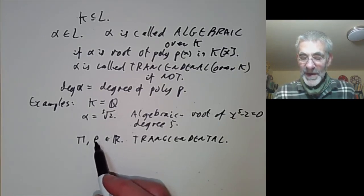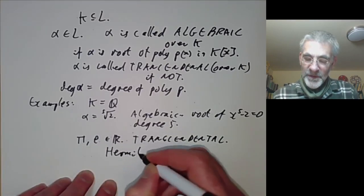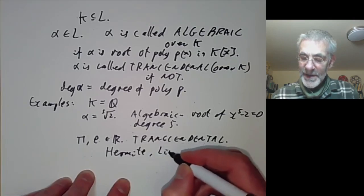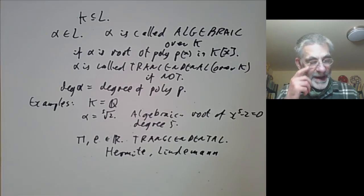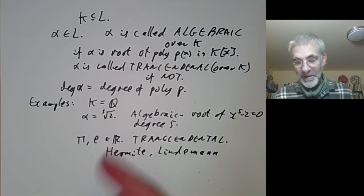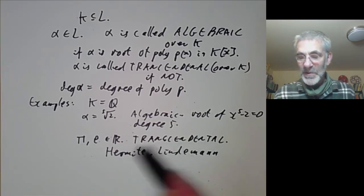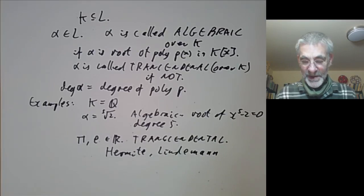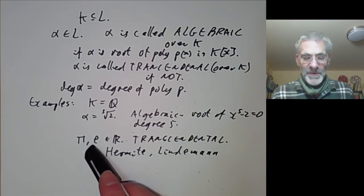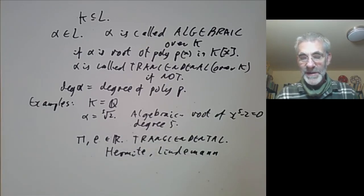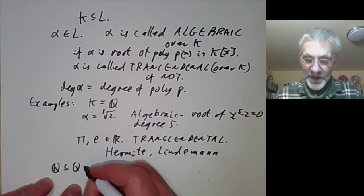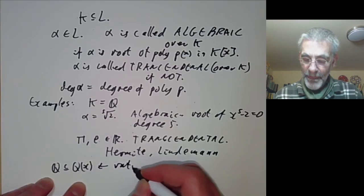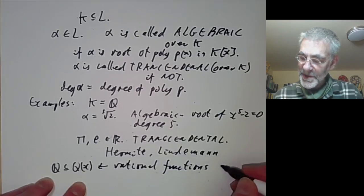Hermite proved e was transcendental back in the 19th century, and Lindemann proved that π was transcendental a few years afterwards. This started off a large theory of transcendental numbers where you try and prove various numbers are transcendental. These are rather difficult examples of transcendental numbers, so let me give you an easy example. If you look at the field Q, it's contained in the field of rational functions over Q. Rational functions are any polynomial divided by any other non-zero polynomial.